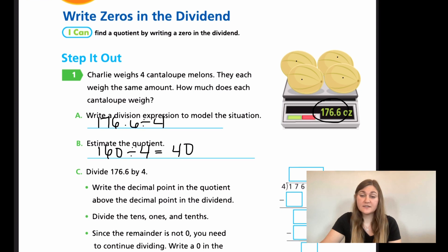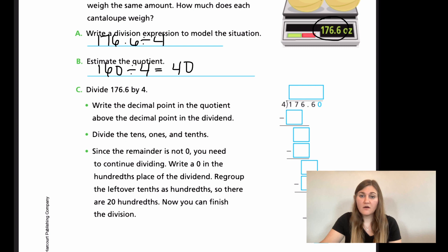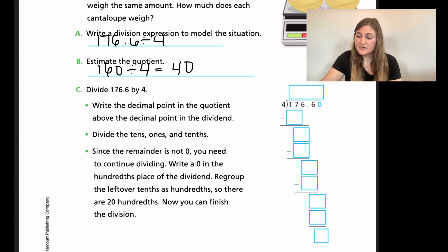For C, now we're actually going to divide out our problem over to the right and it gives us all the steps that we're going to be doing. So first it says write the decimal point in the quotient above the decimal point in the dividend. So all that means is lift the decimal up. So here it is between the sixes. I'm going to write it in that box to start with just so I don't forget about it at the end. That second bullet point is go ahead and divide the tens, the ones and the tens. So we have our 176.6 divided by four. Now can four go into one? No. So I'm going to put a zero there, but four can go into 17 and it can go in four times. And my four times four is going to be 16.